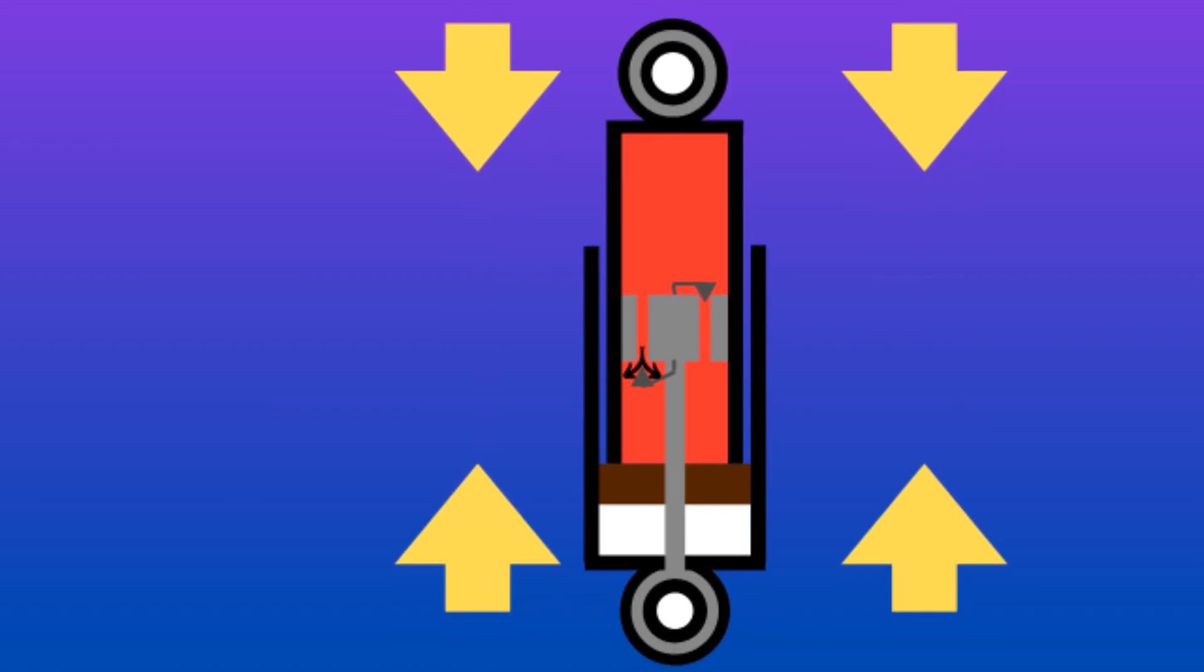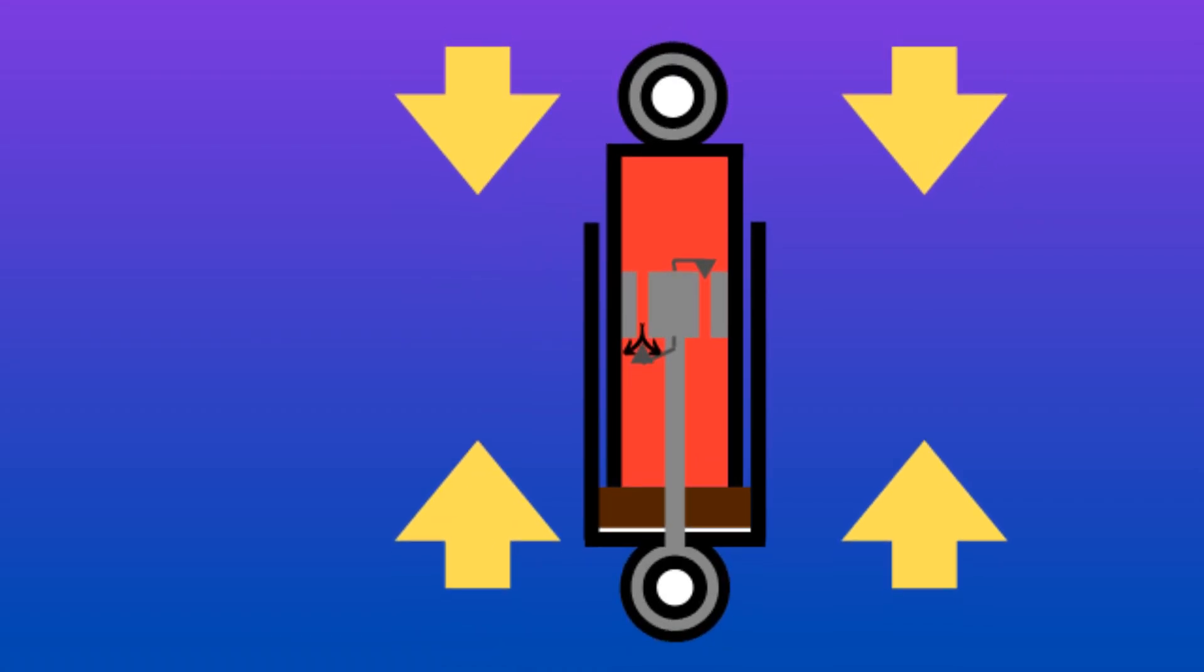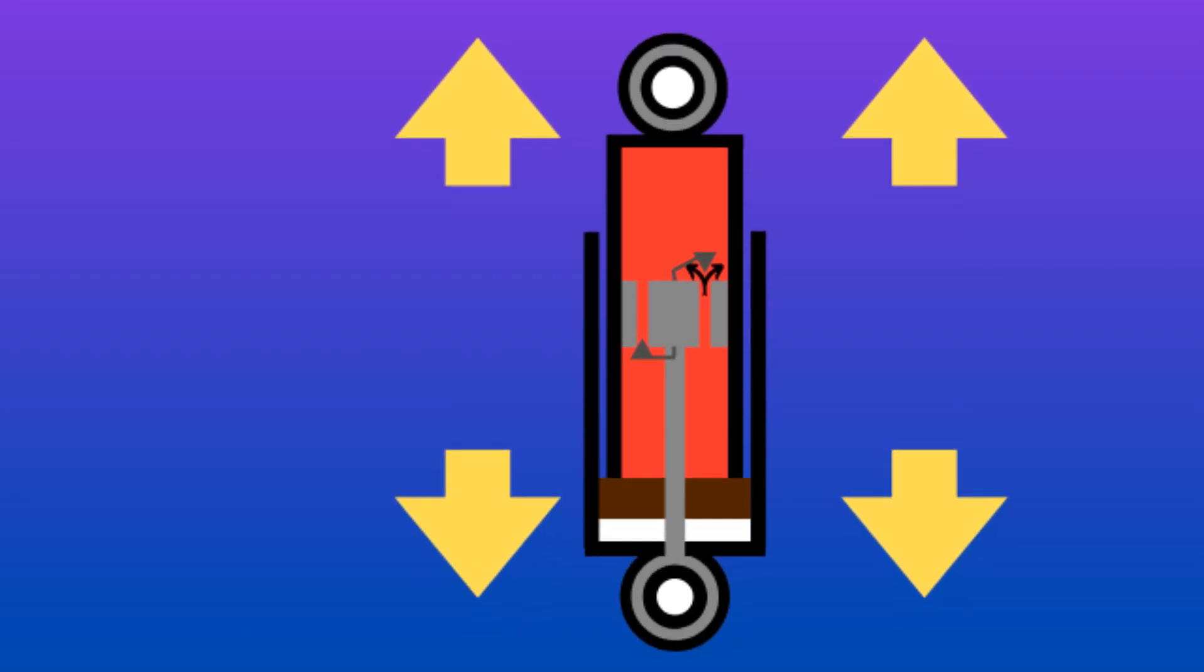Then as the coil spring starts to rebound, the shock absorber experiences an expansion force trying to extend the length of the shock absorber back to its original position, if not even further extended.